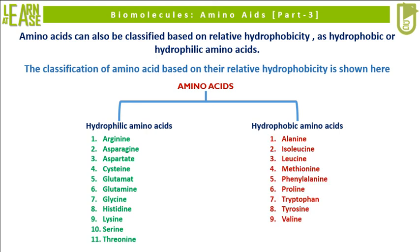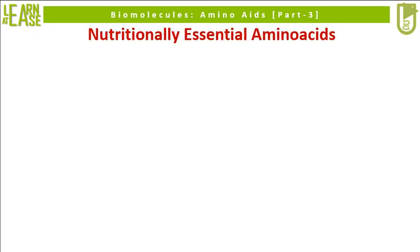Whereas alanine, isoleucine, leucine, methionine, phenylalanine, proline, tryptophan, tyrosine, and valine are categorized as hydrophobic amino acids. These 20 amino acids can also be classified as nutritionally essential and non-essential amino acids.